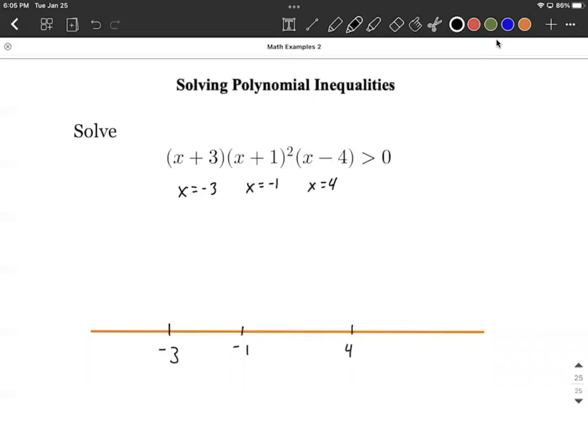From here, what we want to do is test one value in between each section of this number line. So we split up the number line from negative infinity all the way to negative three, between negative three and negative one, et cetera. So we have four different sections on this number line. We're going to pick one value in each section, so anything to the left of negative three, such as negative four.